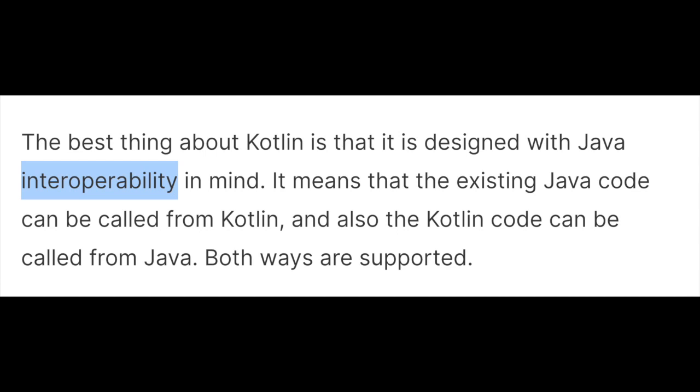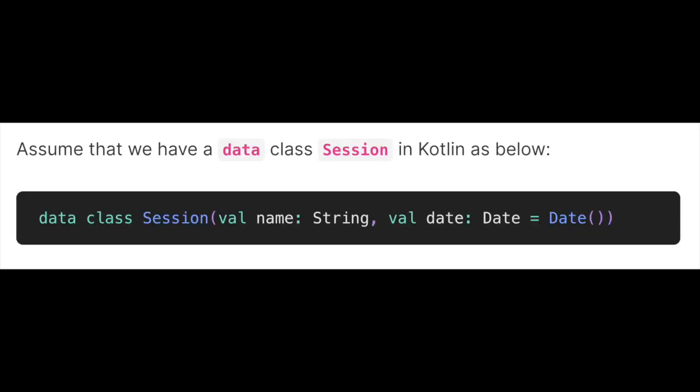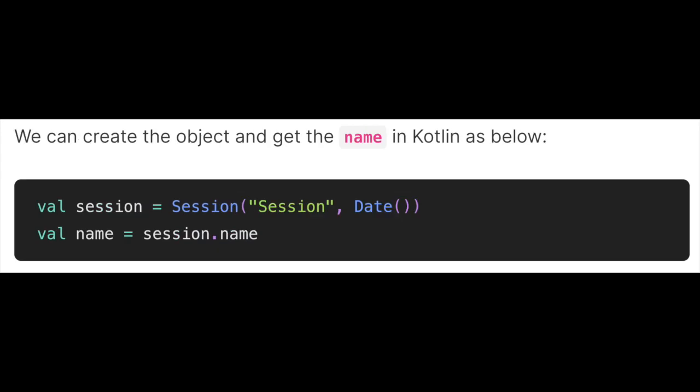We will take an example to learn it. Assume that we have a data class 'Session' in Kotlin like this. We can create the object and get the name in Kotlin simply by creating the session object and writing: val name = session.name. It works as expected.